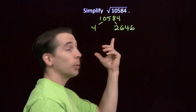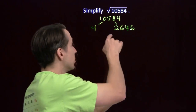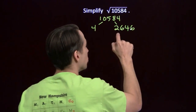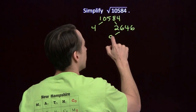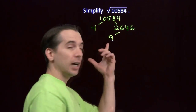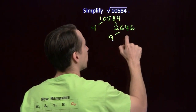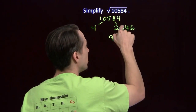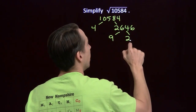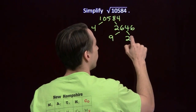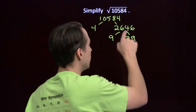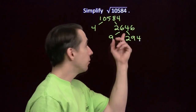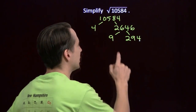But it is divisible by 9. The sum of the digits: 2 plus 6 plus 4 plus 6 is 18. 18 is divisible by 9, so 2,646 is divisible by 9. We can pull that perfect square factor out and divide 9 into this. 9 into 26 goes twice, leaves 8. 9 goes into 84 nine times, leaves 3. 9 goes into 36 four times. So 9 times 294 is 2,646.